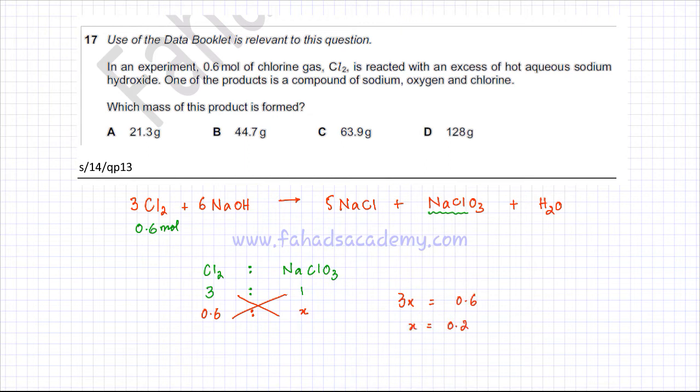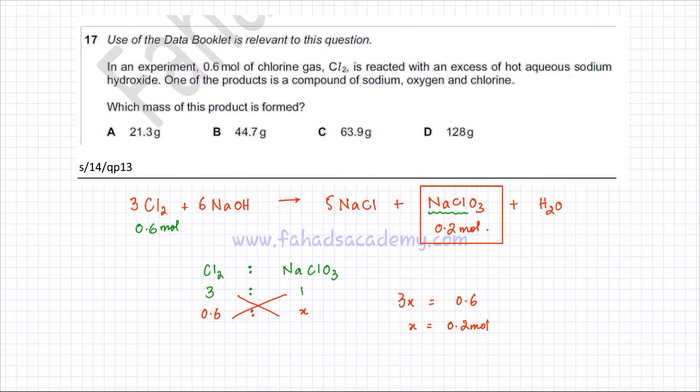At the end of the day, my answer is that the moles of NaClO₃ sodium chlorate are going to be 0.2 moles. And finally, once the moles of NaClO₃ are found, you need to find the mass.